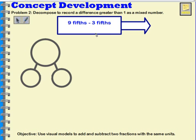If I had 9 paperclips and I took 3 paperclips away, I would have 6 paperclips. In this case, I have 9 fifths. I'm taking 3 fifths away, so I will have 6 fifths left over.